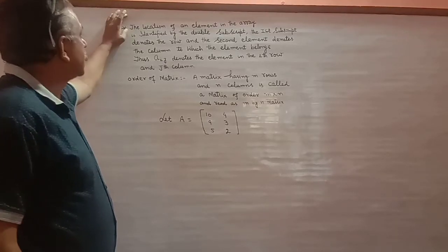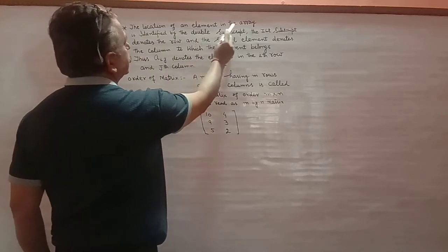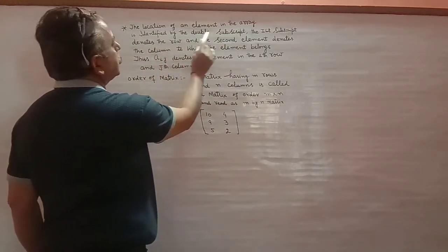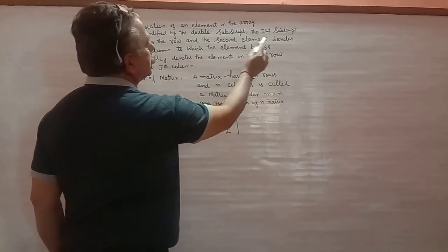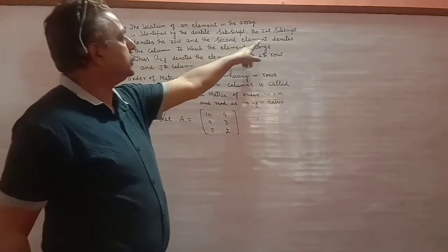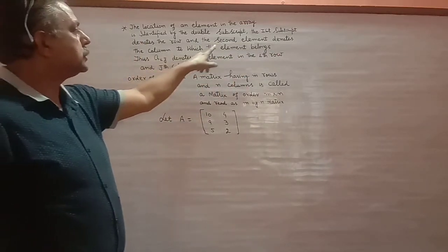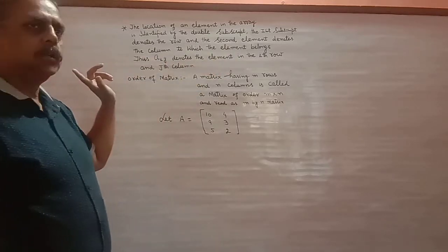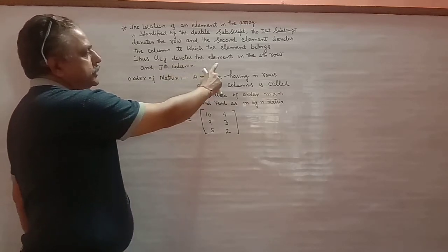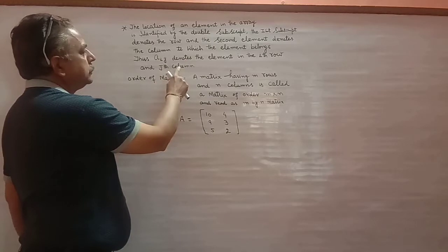The location of an element in the array is identified by the double subscript. The first subscript denotes the row and the second element denotes the column to which the element belongs. Thus, A[i][j] denotes the element in the i-th row and j-th column.